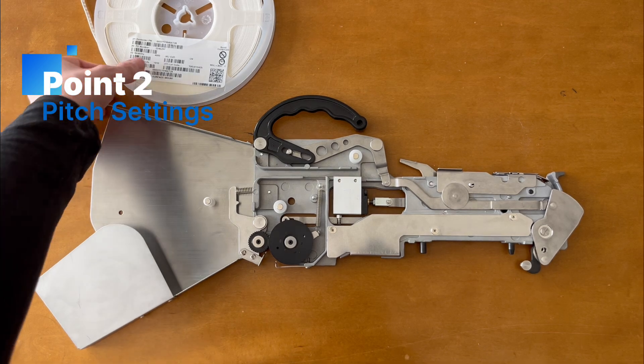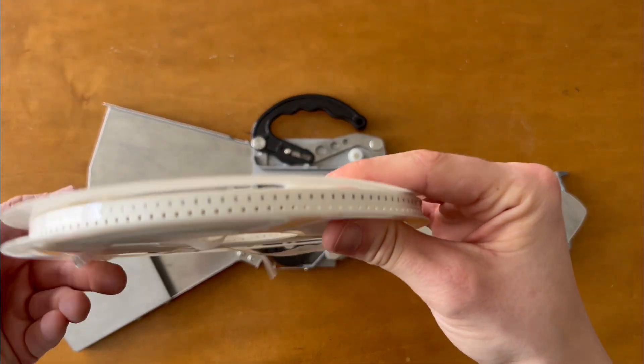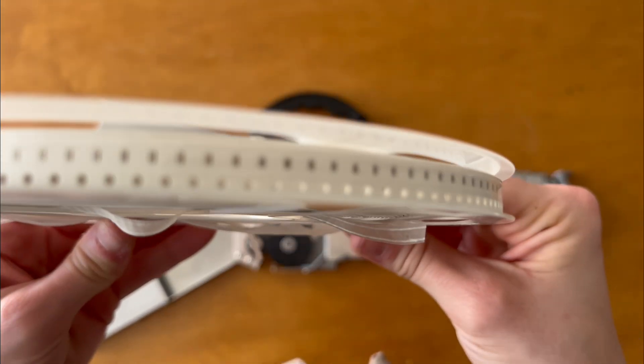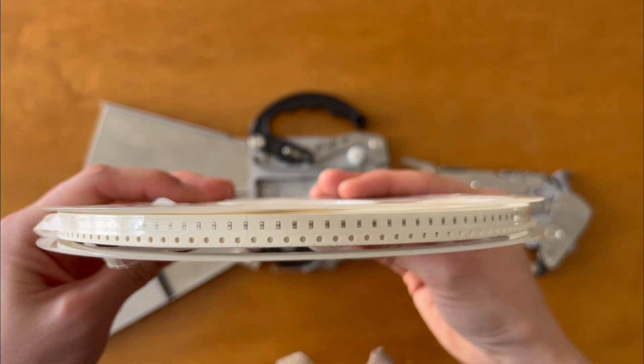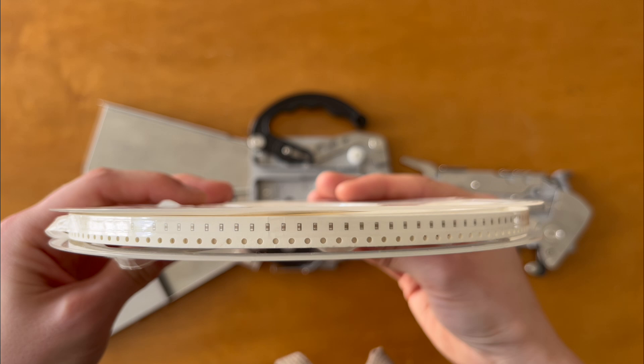Next, let's talk about pitch. This refers to the spacing between each component on the tape. Most components are spaced in 4mm increments, but very small components can sometimes have a 2mm pitch. To ensure accurate feeding, you need to set the correct pitch both on your feeder and in your machine's software.